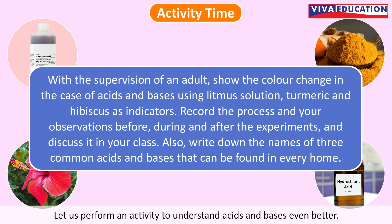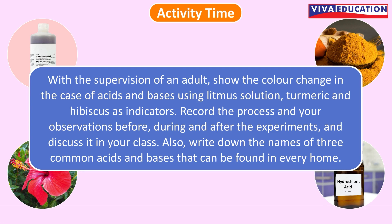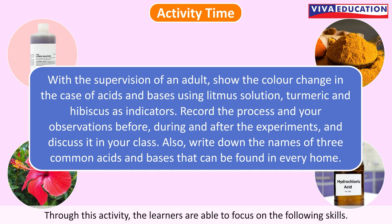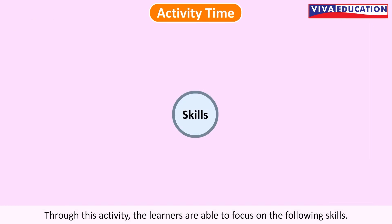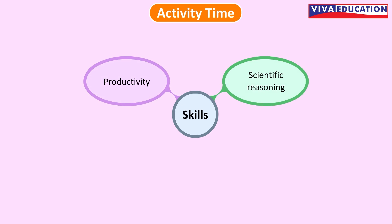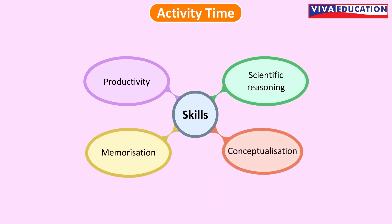Activity time! Let us perform an activity to understand acids and bases even better. With the supervision of an adult, show the color change in the case of acids and bases using litmus solution, turmeric and hibiscus as indicators. Record the process and your observations before, during and after the experiments and discuss it in your class. Also, write down the names of three common acids and bases that can be found in every home. Through this activity, learners are able to focus on the following skills: scientific reasoning, productivity, conceptualization and memorization.